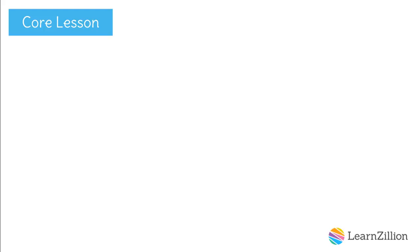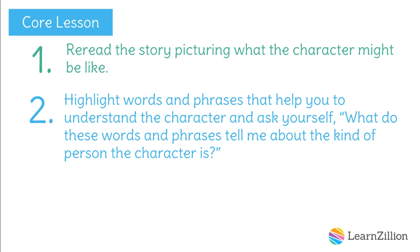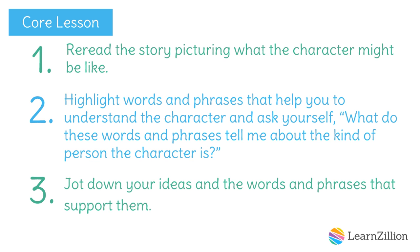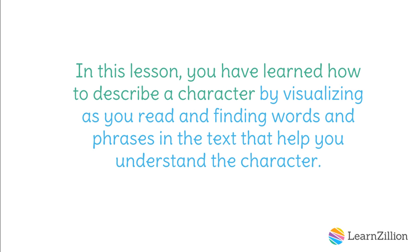Today, we explored the character of the king in Rumpelstiltskin by following three steps. First, we re-read the story, picturing what the character might be like. Second, we highlighted words and phrases in the text that helped us to understand the character and asked ourselves, what do these words and phrases tell me about the kind of person the character is? Third, we jotted down our ideas and the words and phrases that support them. In this lesson, you have learned how to describe a character by visualizing as you read and finding words and phrases in the text that help you understand the character.